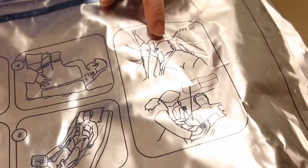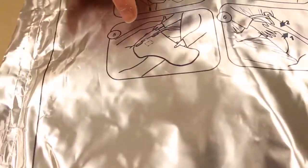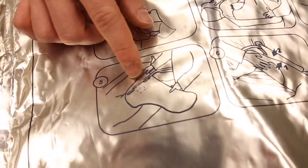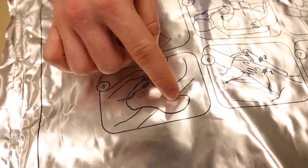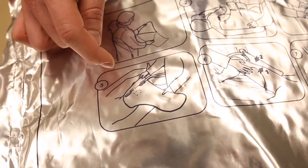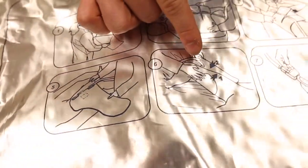You can put defib pads under the Arctic Sun pads - that's fine. Then do the thighs. The thigh pads are a little different; they don't have the separator in the middle like the chest pads do. You'll put them on the same way.